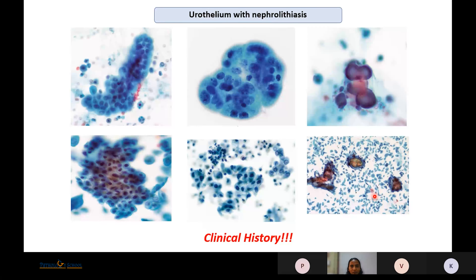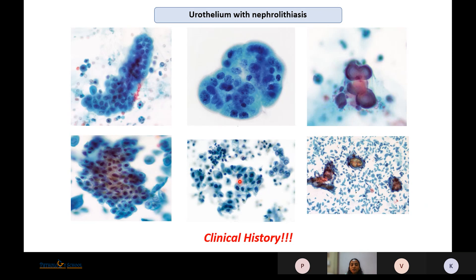In cases of nephrolithiasis, we can have tight clusters with nuclei showing hyperchromasia, nuclear overlapping, prominent nucleoli, and calcium concretions. The nuclei may appear hyperchromatic, but because we know the clinical history of nephrolithiasis, it is still placed in Negative for High-Grade Urothelial Carcinoma. If the history was not known, this could have been labeled as atypical urothelial cells, but with a known cause for the atypia, this degree of hyperchromasia is acceptable.